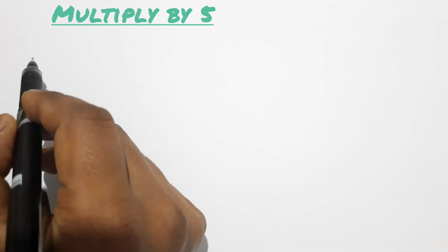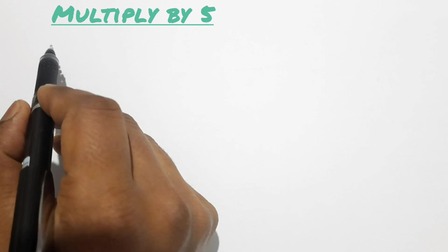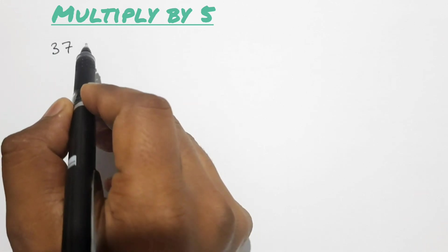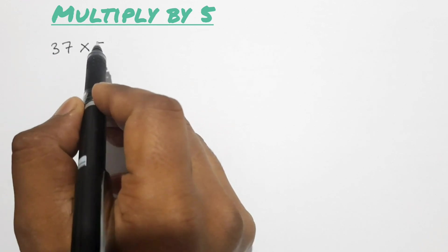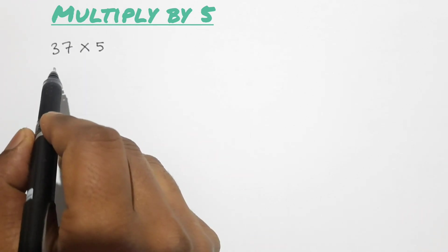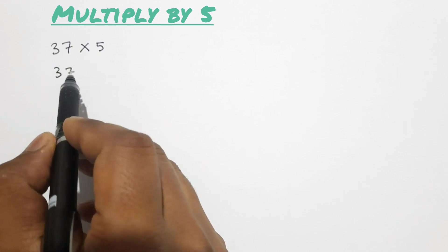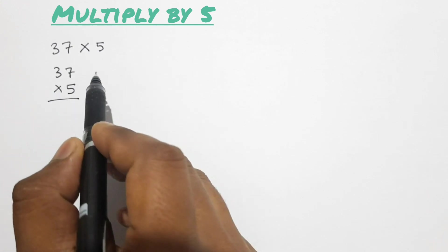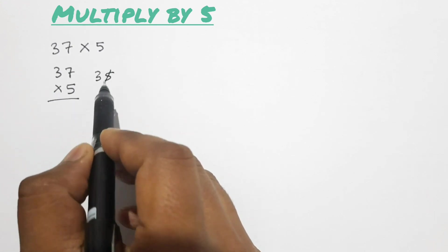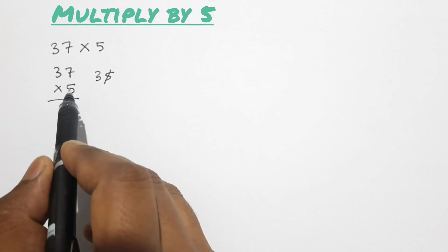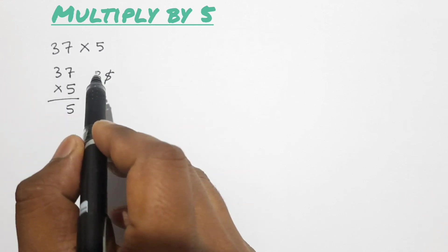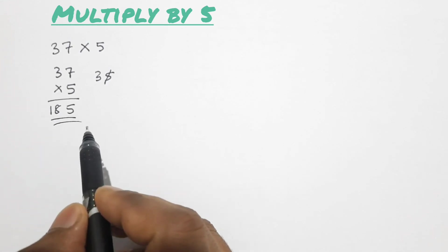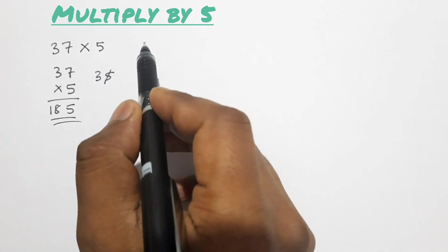First we are going to learn the quick multiplication trick by 5. Suppose we have any number — let's take a two-digit number, 37. When we multiply this number by 5 in our usual method, we write 37 then multiply by 5: 5×7 is 35, write 5 and carry 3; 5×3 is 15, plus 3 is 18. So the answer is 185.